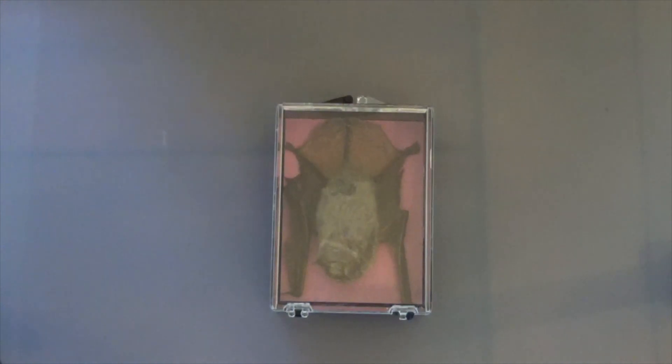They help us to have things like bananas, avocados, mangoes, chocolate. And of course, they are a mammal, the only flying mammal. And the kitty hog nose bat or bumblebee bat is the smallest mammal in the world.